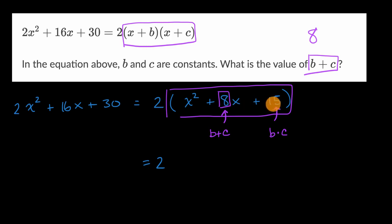And when I multiply them, I get 15. Let's see, 3 and 5 seem to work. So it's gonna be 2 times (x + 3) times (x + 5).